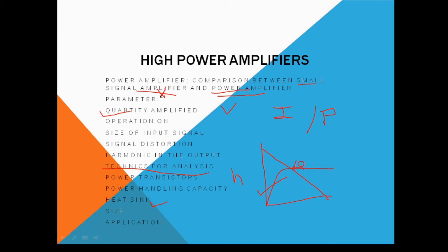Regarding heat sinks: heat sinks are not used in the case of the small signal amplifier, but in the case of the power amplifier heat sinks are essential. Since large power is transmitted in the power amplifier, the amplifier gets heated, and heat sinks are used to reduce that heat. Regarding the size of the amplifier: for the small signal amplifier the size is very small, but for the power amplifier the size becomes very large due to the power transistor and the use of heat sinks. Finally, regarding applications: the small signal amplifier is used as a preamplifier or voltage amplifier, while the power amplifier is used in PA systems, CD players, and similar devices.